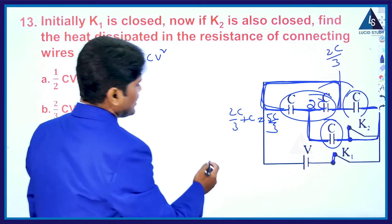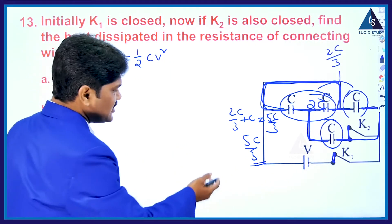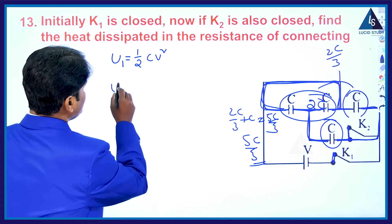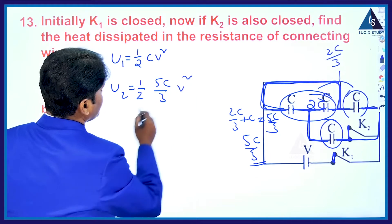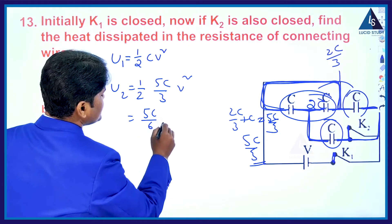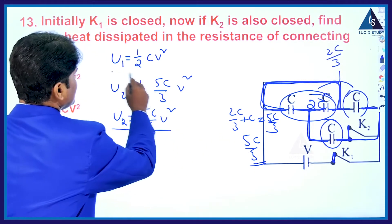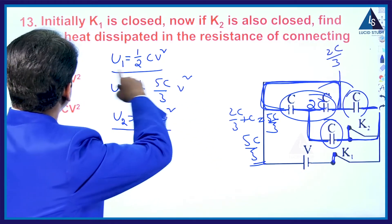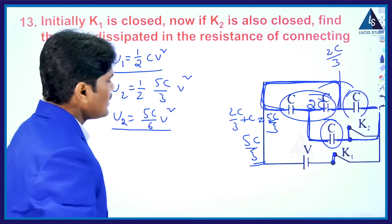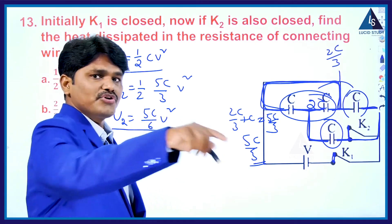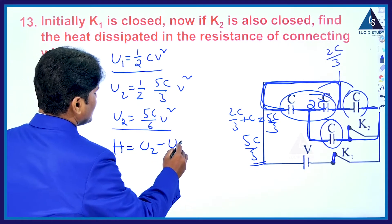The energy U2 associated with the 5C/3 effective capacitance is U2 = ½ × (5C/3) × V² = 5CV²/6. The difference in energy between the two cases is produced in the form of heat energy, so H = U2 − U1.